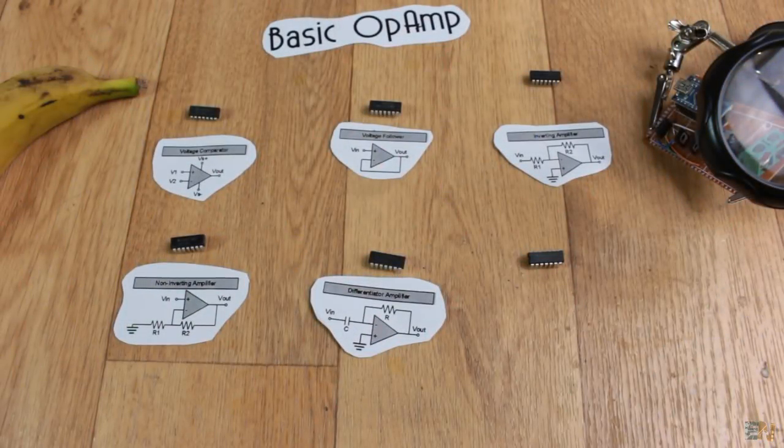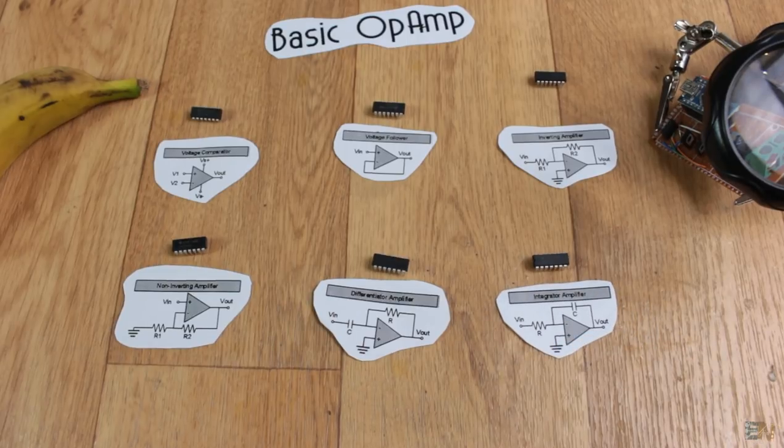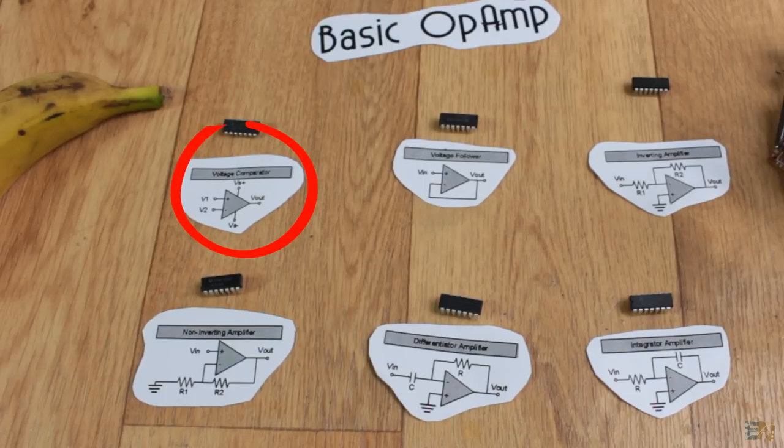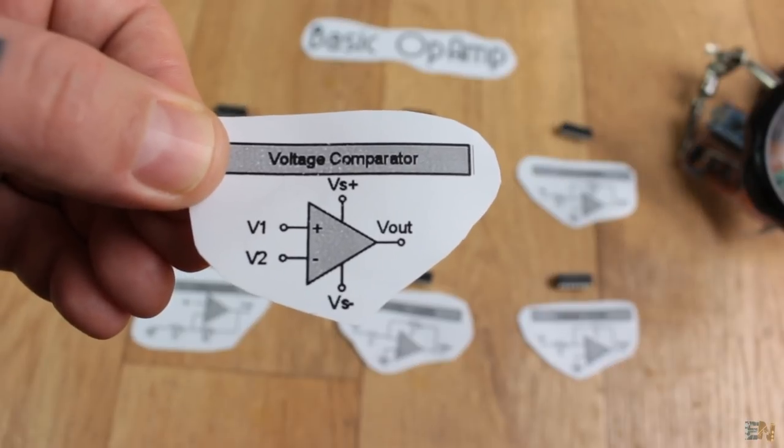What's up my friends, welcome back. These are the configurations that we will study today. First of all, let's start with the most basic configuration of them all, the comparator, which is basically just the op-amp and nothing more.